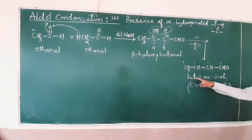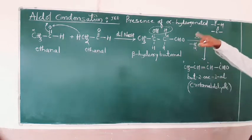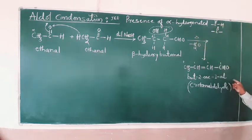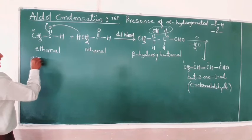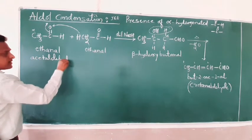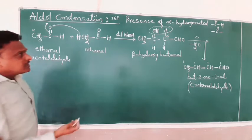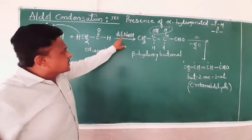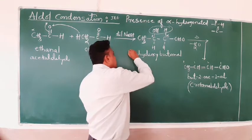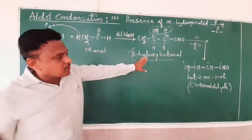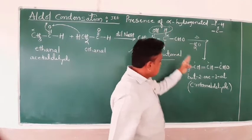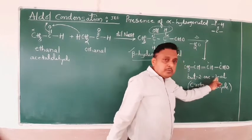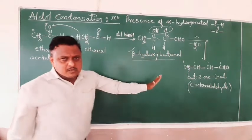Commercially we call the name crotonaldehyde, or but-2-enal. This is a very important condensation reaction of aldehyde with aldehyde — a simple aldol condensation. To summarize: ethanal combined with ethanal in presence of dilute alkali (NaOH or KOH) forms beta-hydroxy butanal. After removing water, you get but-2-enal. This is your NCERT question — you must practice it.